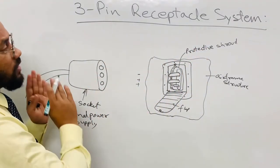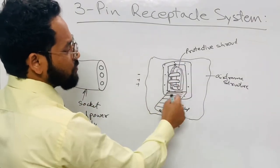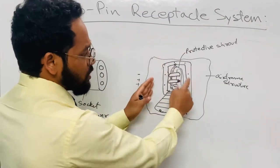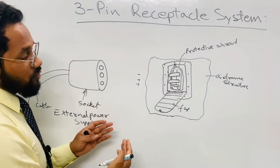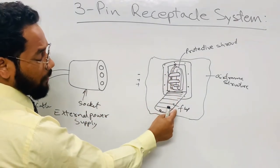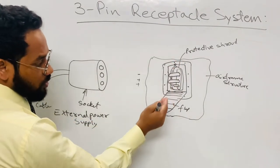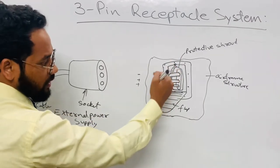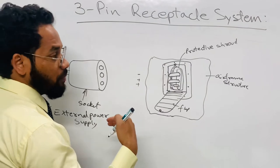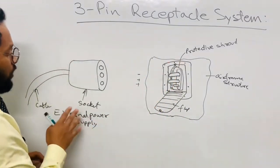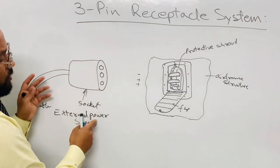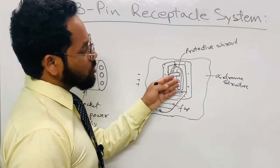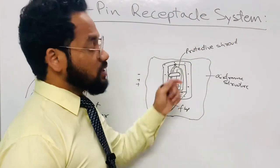In the three-pin receptacle system, the three pins are mounted in the aircraft structure within a protective shroud, and this complete unit is kept in a recessed housing in the airframe structure, possibly located at the nose section of the fuselage. These three pins can be covered by a hinged flap with a quick release fastener. When power is needed, the external power supply socket is coupled into this structure — the pins are electrically conductive.